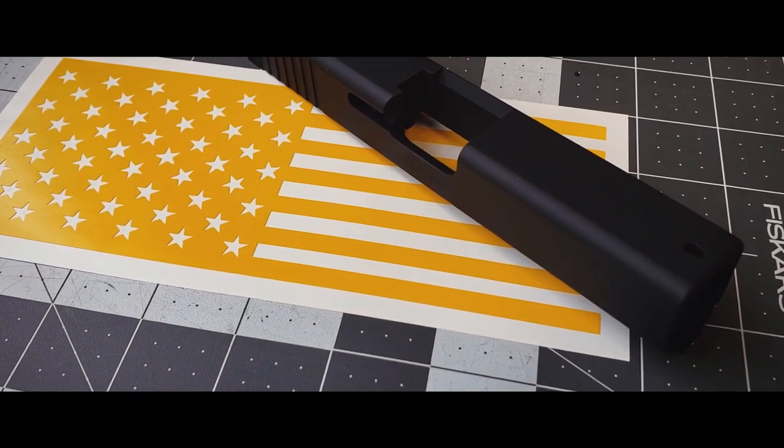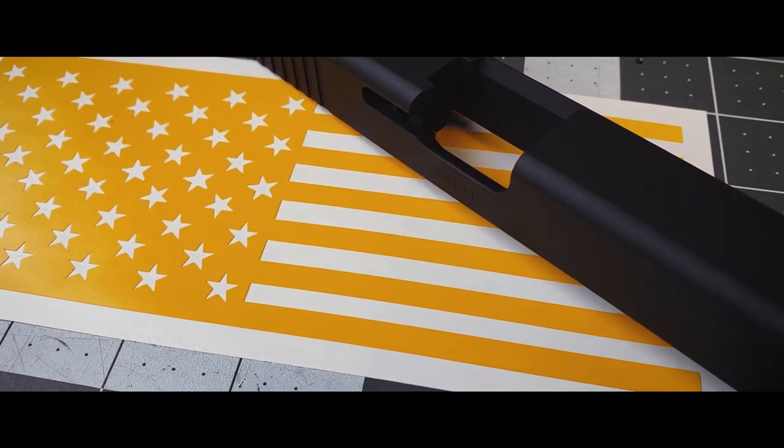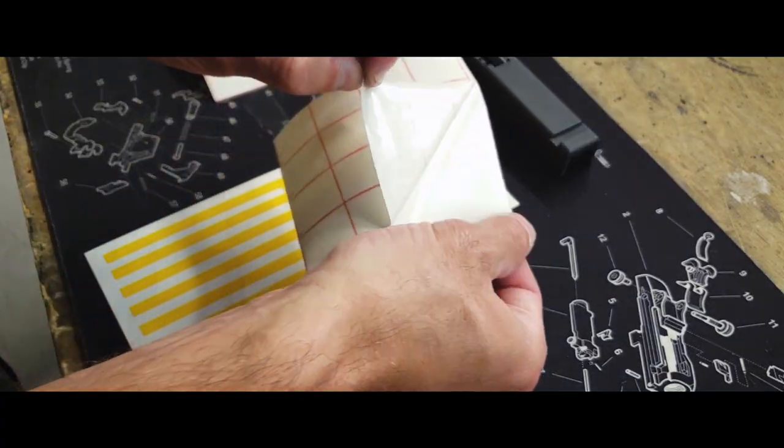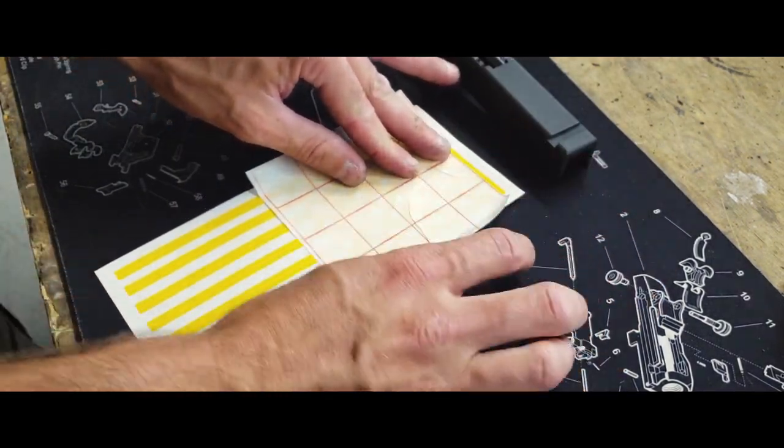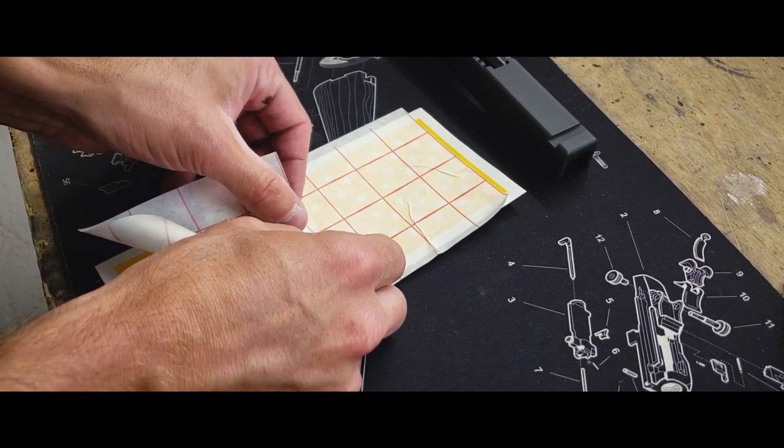With the base coat here, it's time to apply our stencil. The stencil is available from our website freedomstencils.com or you can click the link in the description below. For applying the stencil, we recommend use of transfer tape as seen here because it greatly simplifies the application process.